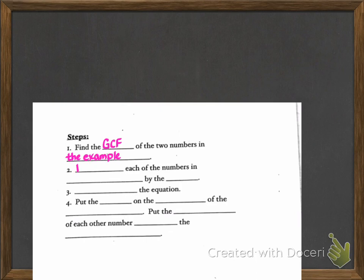Step 2, we're going to divide each of the numbers in the parentheses by the GCF. Step 3, we're going to rewrite the equation.